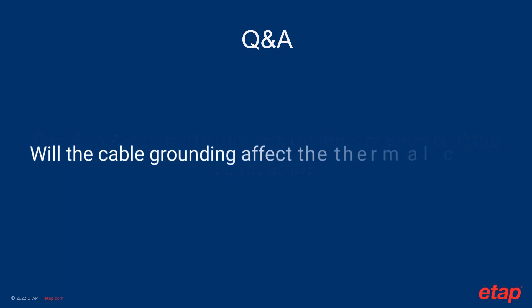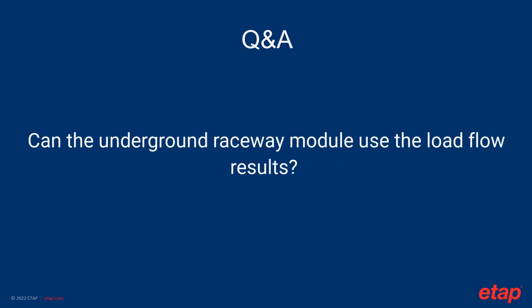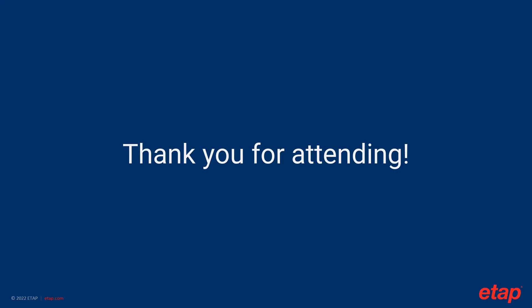The fourth question: will cable grounding affect the thermal calculation? Yes — when the cable conductor carries load current, it induces a standing voltage on the metallic armor. When this armor is grounded at both ends, a closed loop forms and circulating current is produced in the armor. This circulating current generates significant heat and eventually increases cable temperature. Regarding the final question on whether the underground raceway module can use multiple results from load flow: yes, when running the load flow calculation, the cable operating loading is automatically updated into the cable editor and can be used by the underground raceway module.